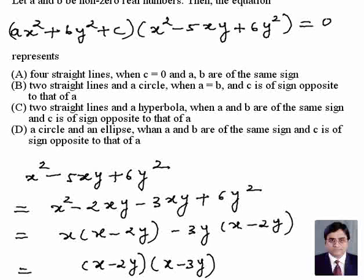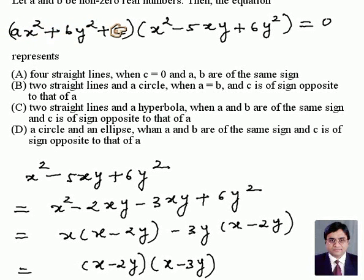So option D is out. Now for option C, let's see if it represents a hyperbola — where a and b are of the same sign. But if this were to represent a hyperbola, how can a and b be of the same sign? A hyperbola is in the format x²/something - y²/something, so option C is out.